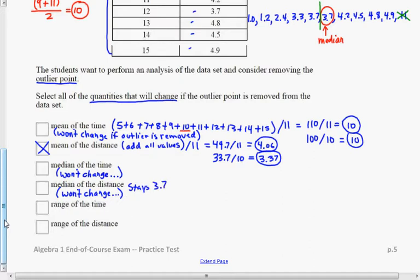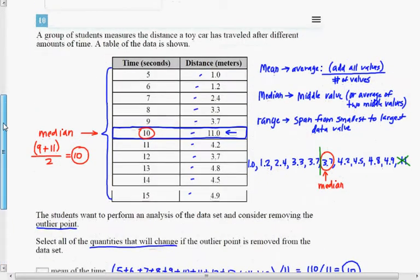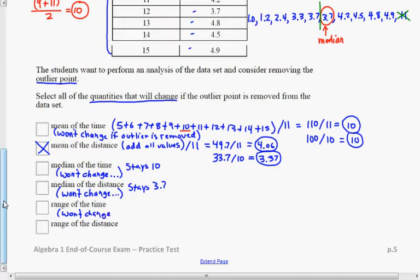And what did the other one? The median of the time stays 10. So nothing there. All right, the last thing to check is the range, and this is pretty easy. The range of the time wouldn't change. The range would stay going from 5 to 15. So this won't change. If we remove that middle value of 10 seconds, the range stays going from 5 seconds to 15 seconds.